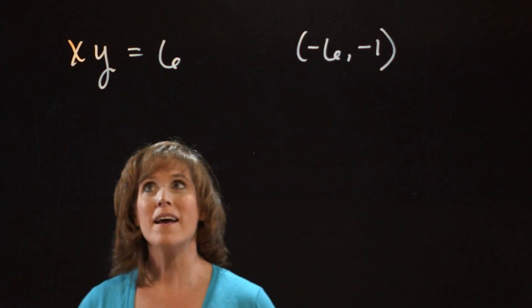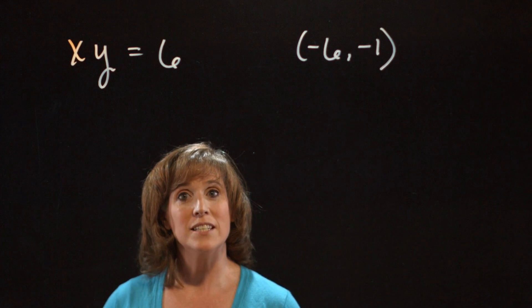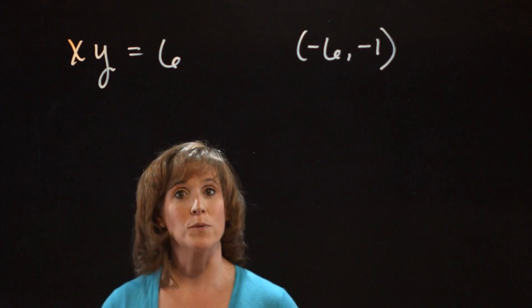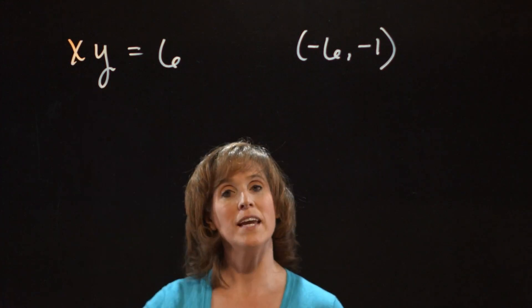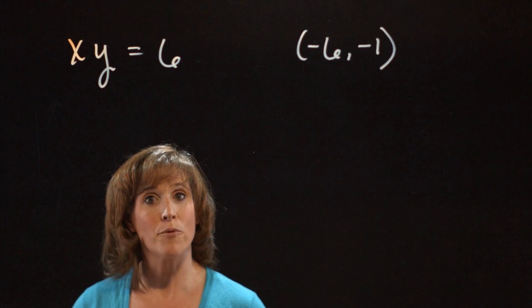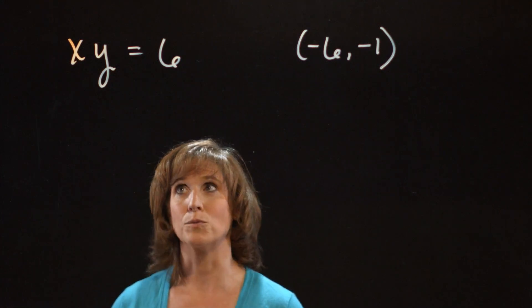OK, so I've got my equation x times y equals 6. I want to differentiate both sides with respect to x. On the left hand side, I notice that my main operation is a product, so I'm going to use the product rule.